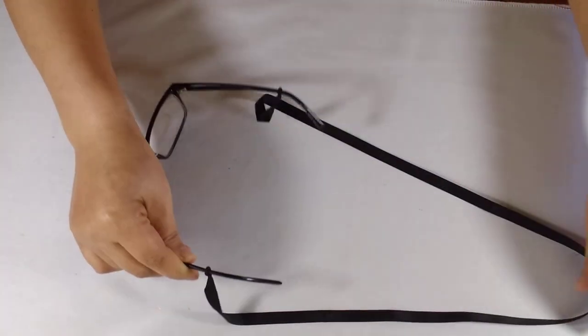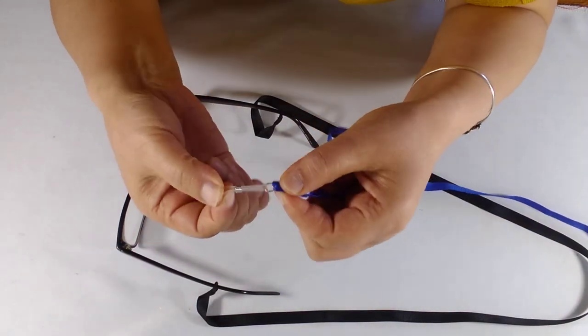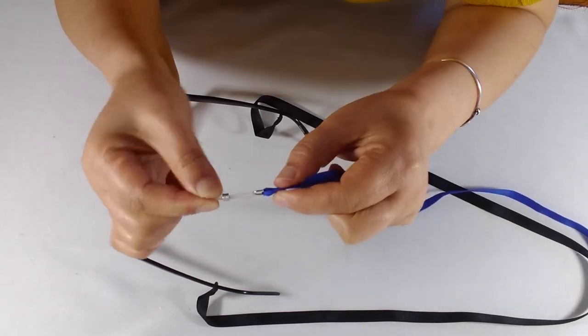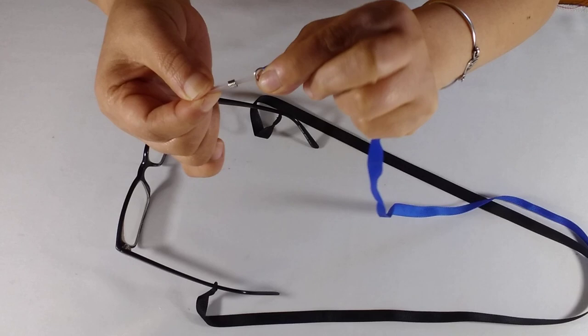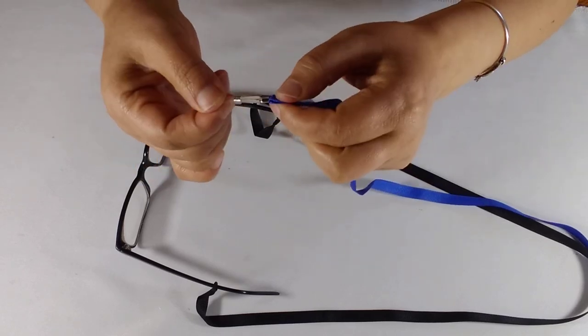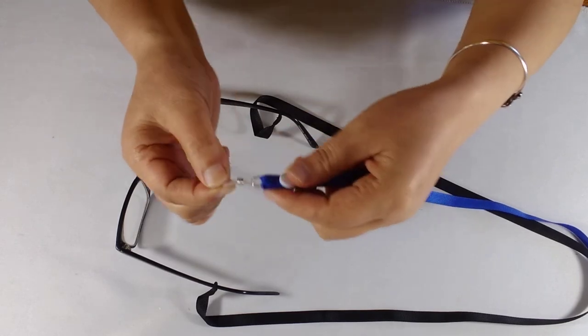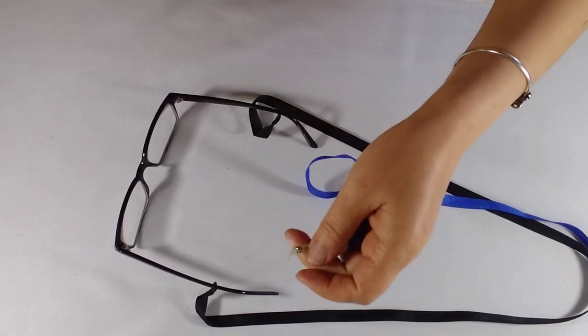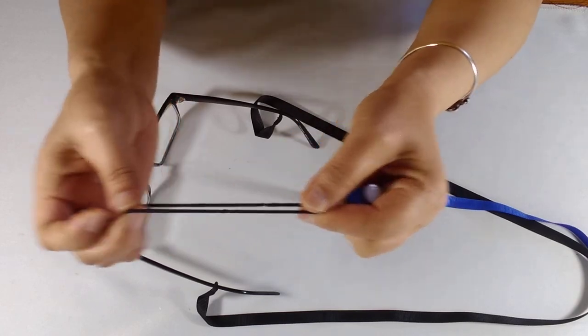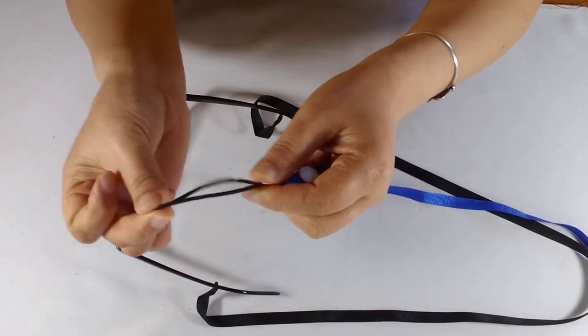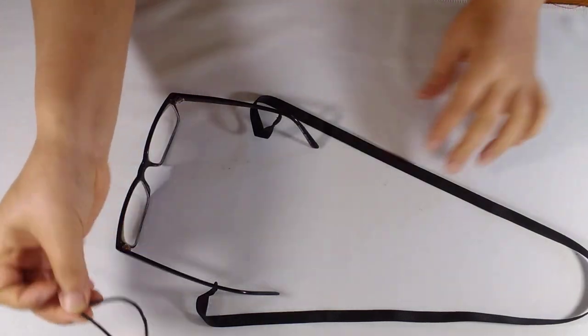The glasses chains you normally buy from the market have this type of loop, but it's not necessary. You can always make yourself the style you want. Today I'm going to show you how to make this using one of the hairband elastic hair ties, so it's very easy and simple.